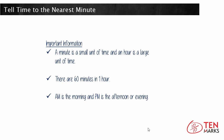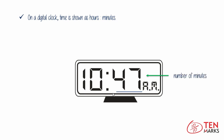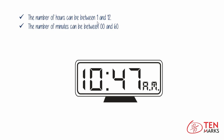On a digital clock, time is shown as hours and minutes — the hours first and then the minutes. The first number shows the number of hours and the second number shows the number of minutes. The number of hours can be between 1 and 12, and the number of minutes can be between 00 and 60. So as you see on this clock, it shows 10:47 A.M., which means 10 hours and 47 minutes after the hour in the morning.